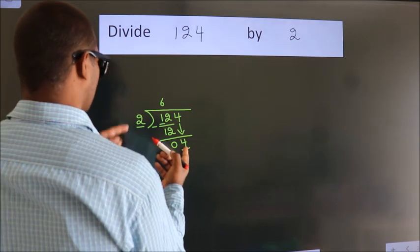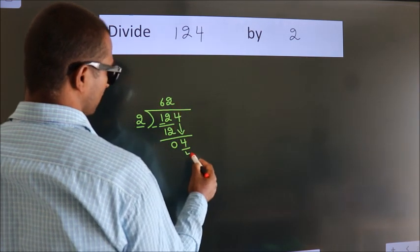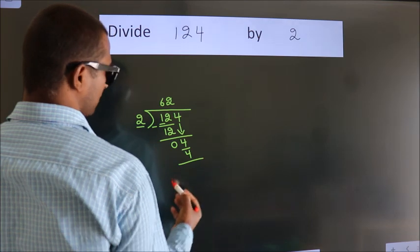When do we get 4? In 2 table, 2 times 2 is 4. Now we subtract.